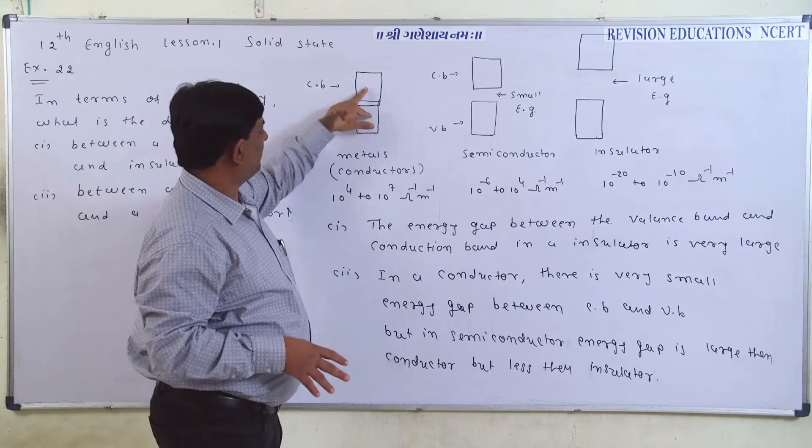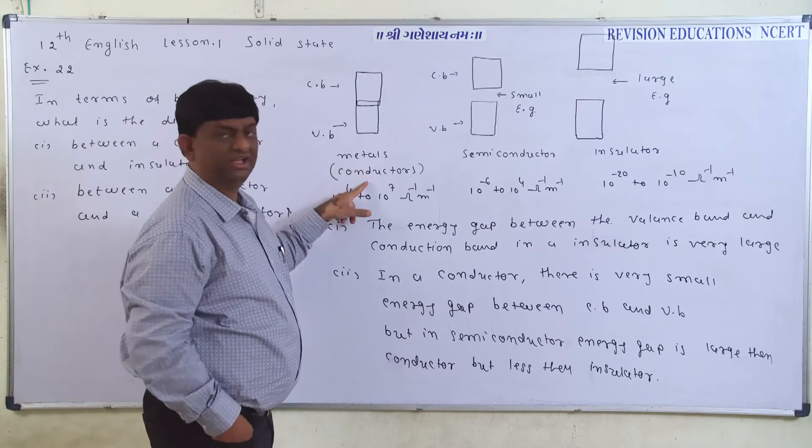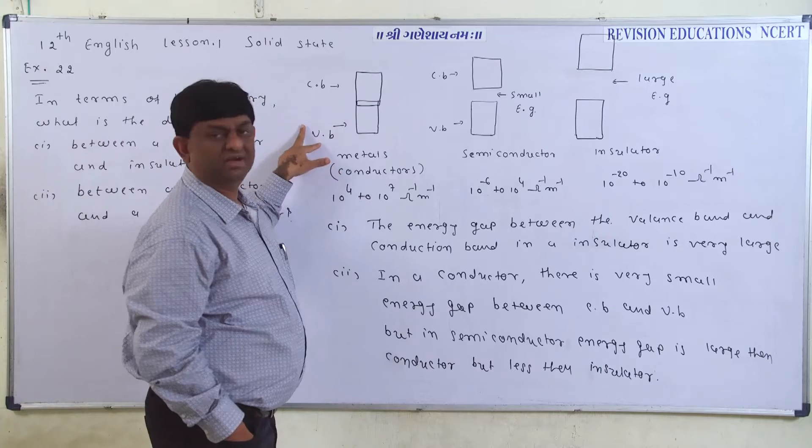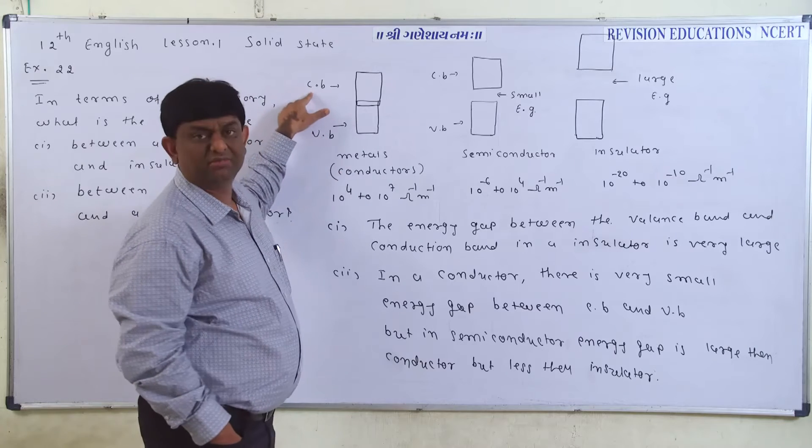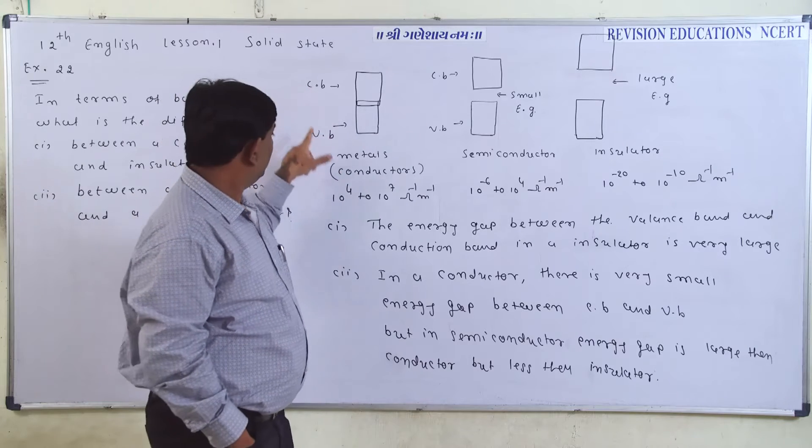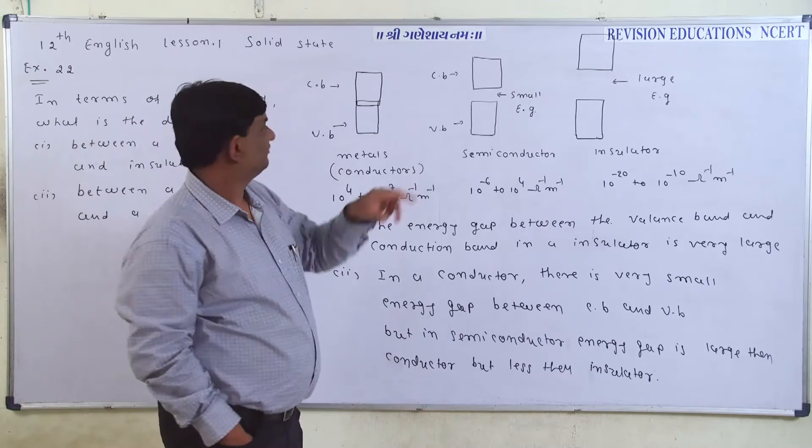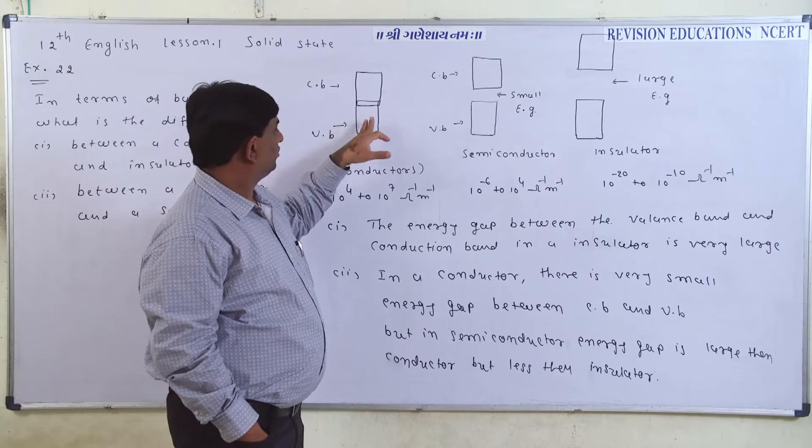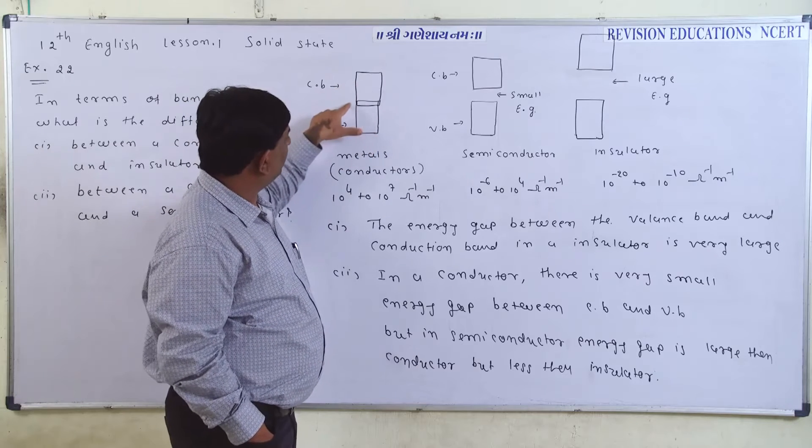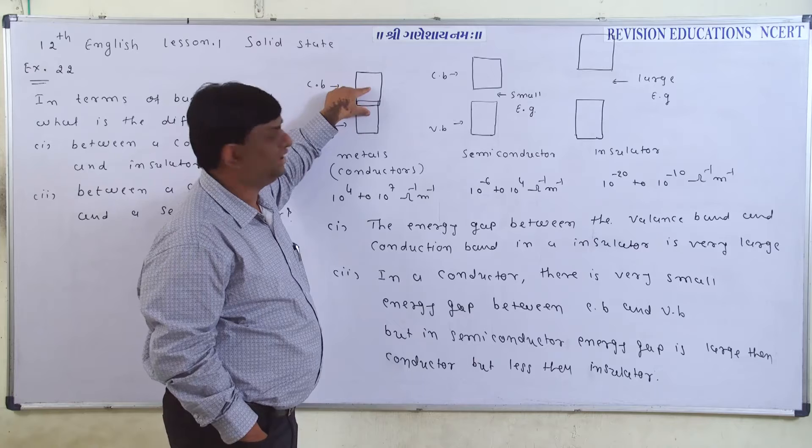This diagram is called Metals, which is called Conductor. VB is called Valence Band and CB is called Conduction Band. Valence Band, electron reach, and conduction band, electron from the conduction band. So, Valence Band and Conduction Band, the gap is not completely different.